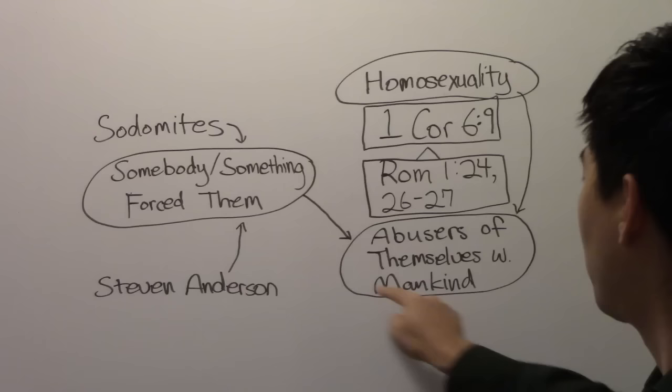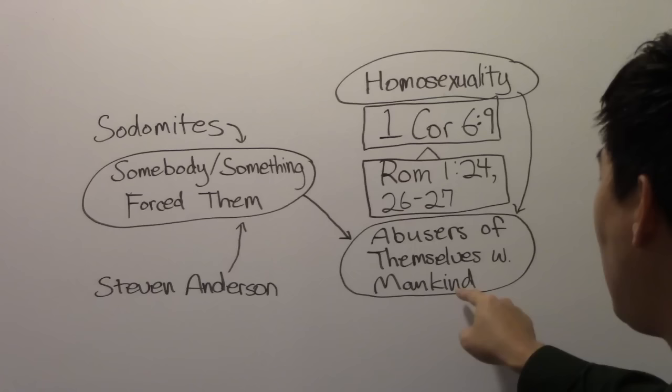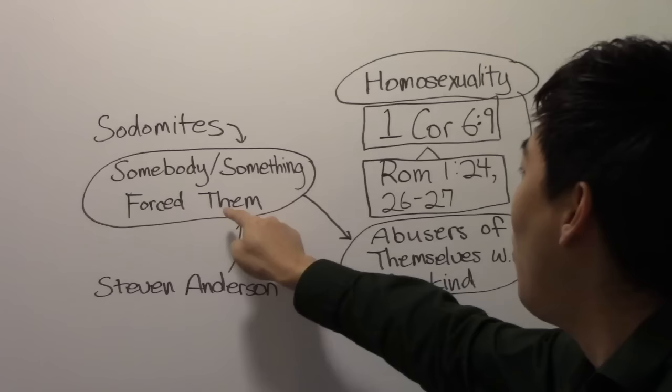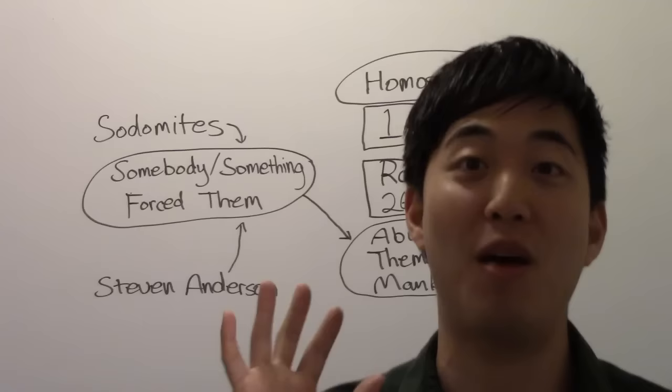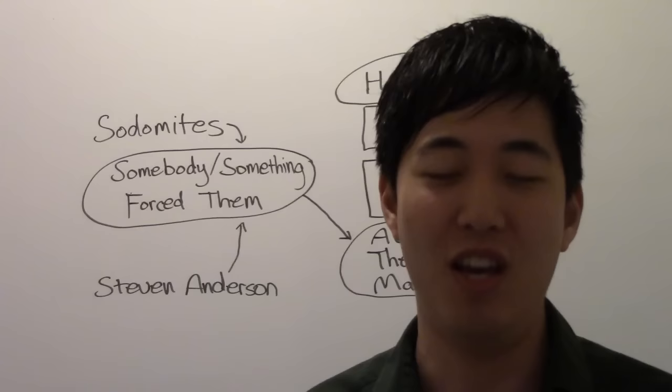Oh, that's not referring to homosexual. What? It's pretty plain though. Abusers of themselves with mankind. They're going to say this: Well, it says abusers, so it's somebody or something forcing them to do the homosexual intercourse. That's what the Bible's condemning, not sodomy itself, but rather something that forced them to do that act. That's ridiculous.